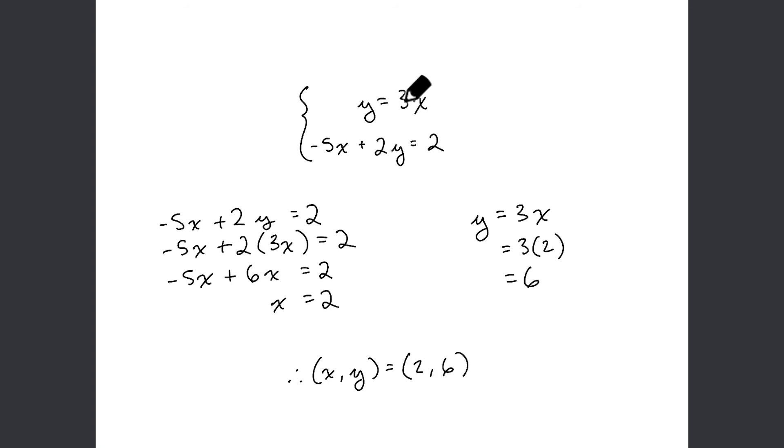In this system of equations, where we only have two variables to solve for, x and y, once we have x, solving for y is a piece of cake. So we can take the first equation in the system, we can substitute 2 in for the x in 3x, and 3 times 2 = 6.